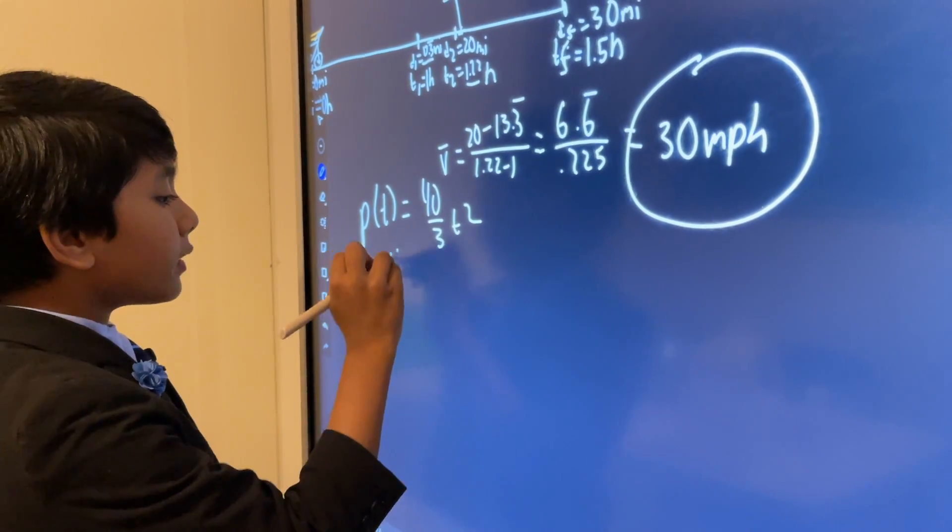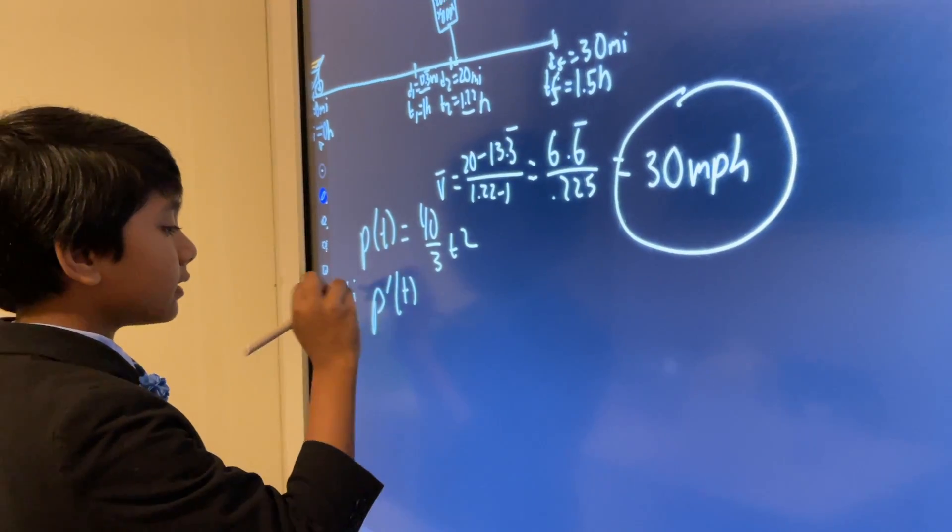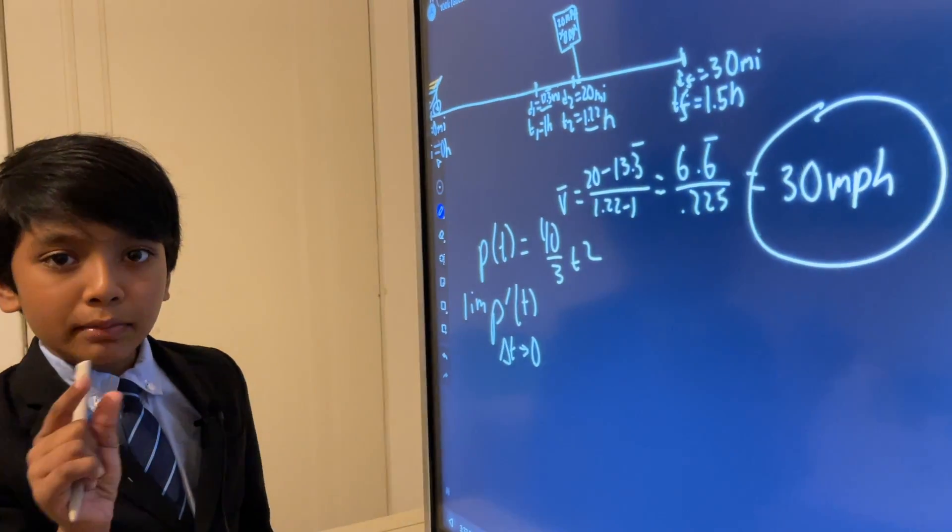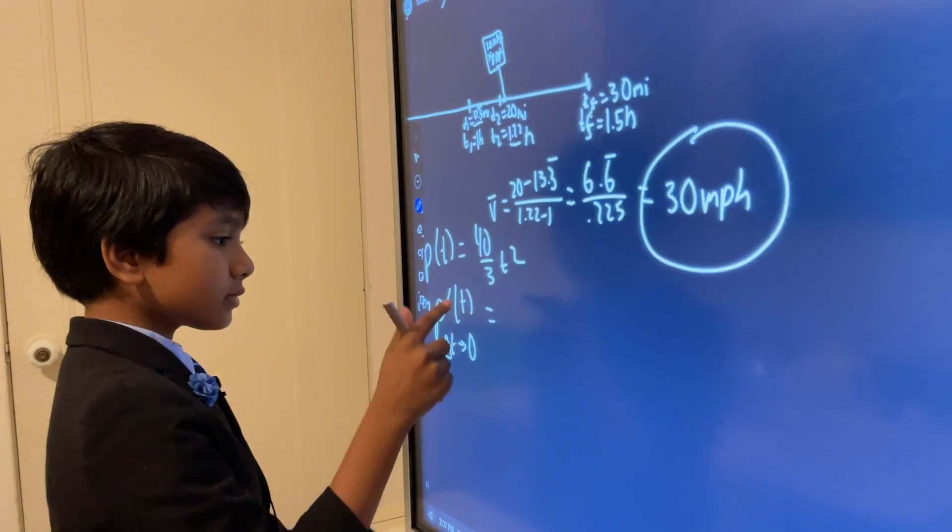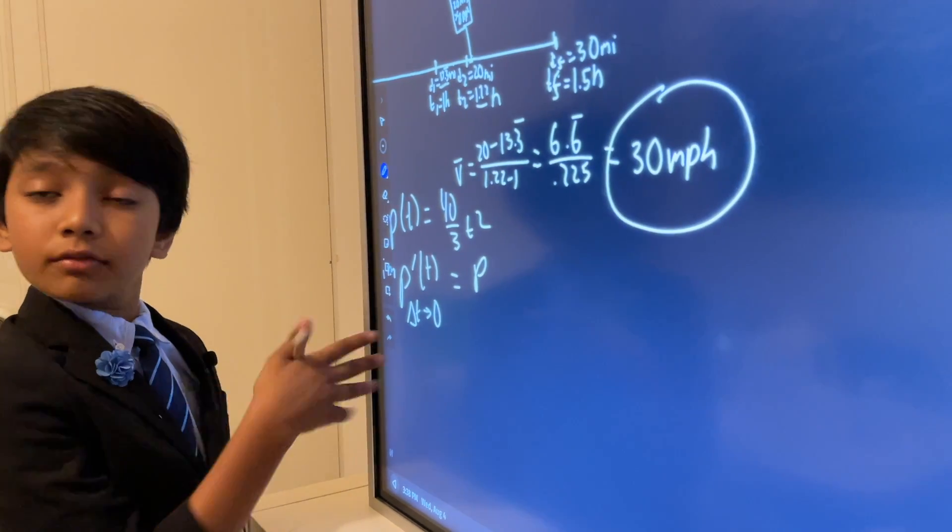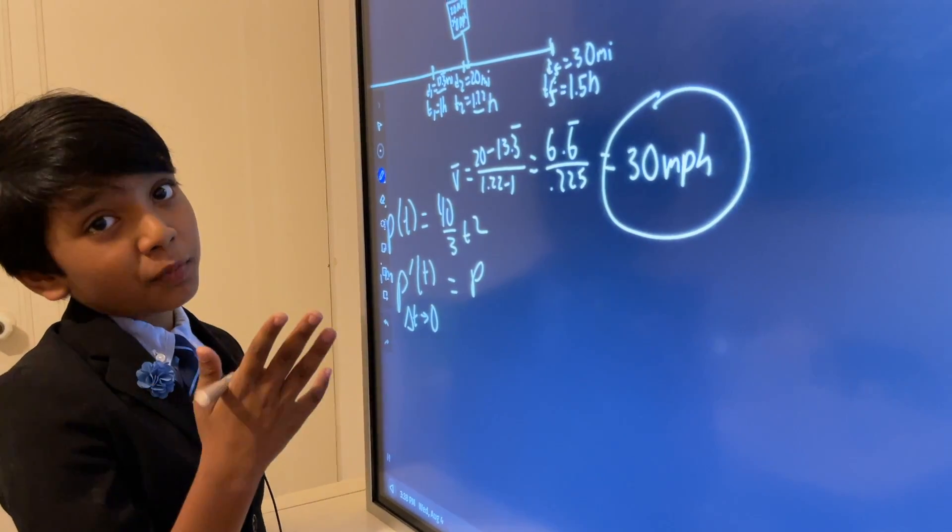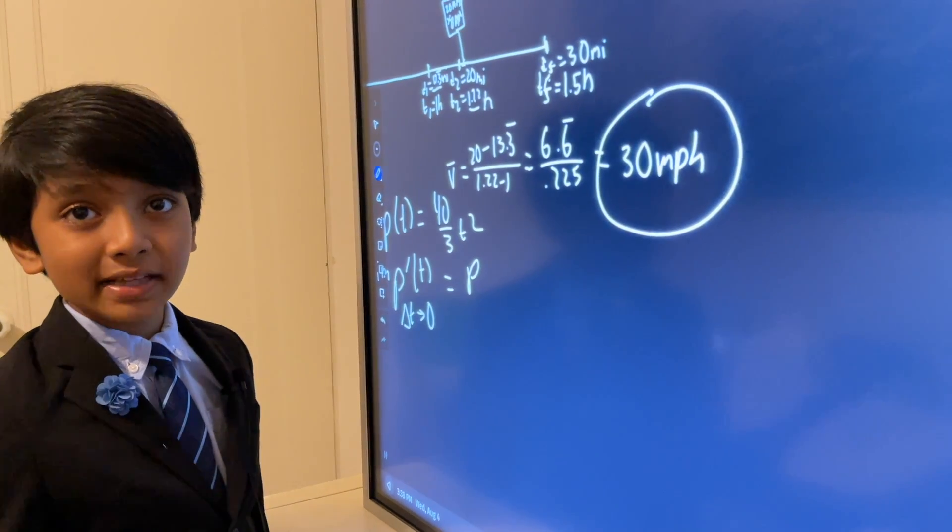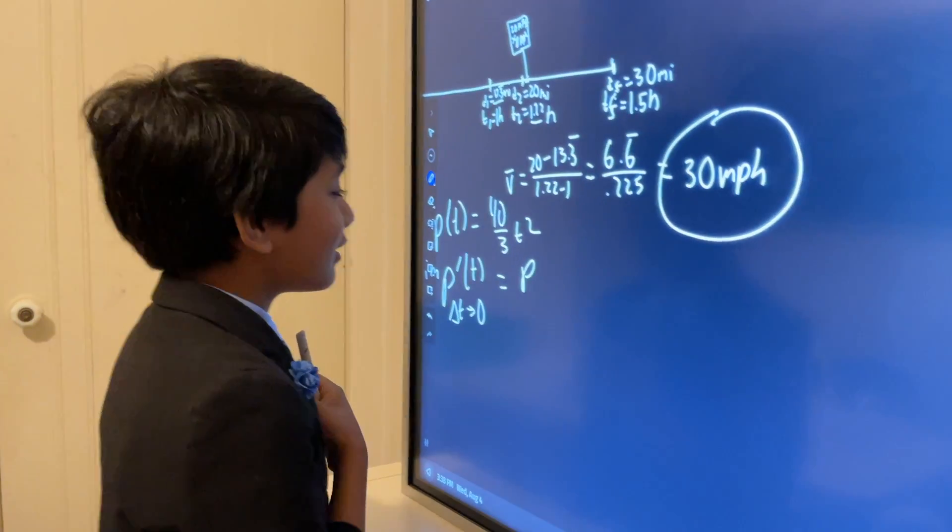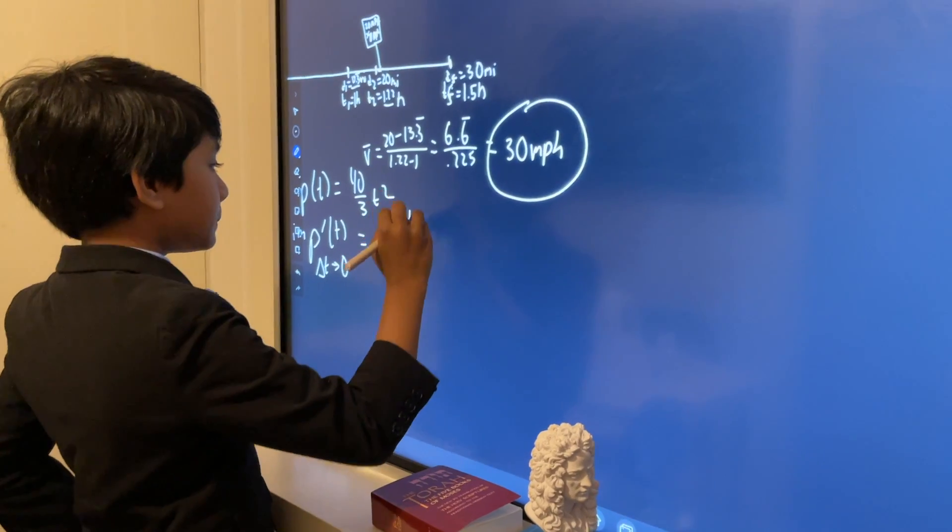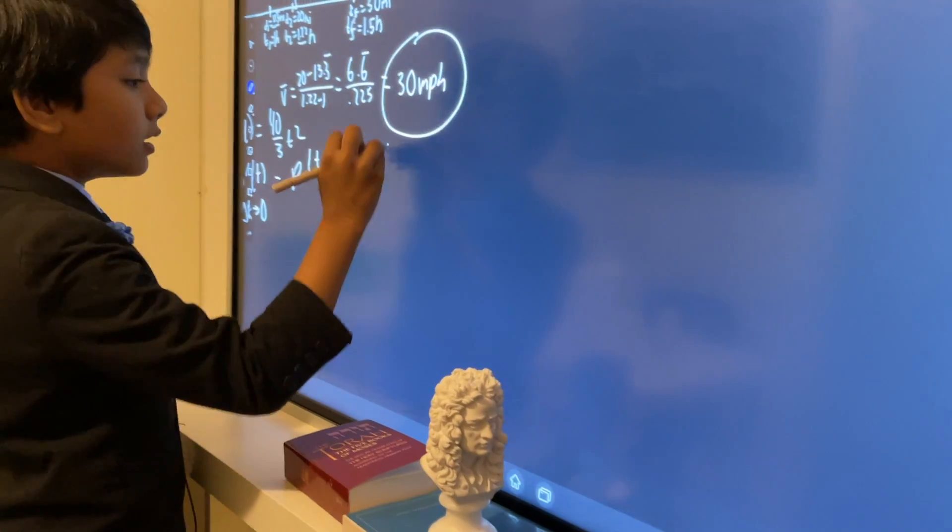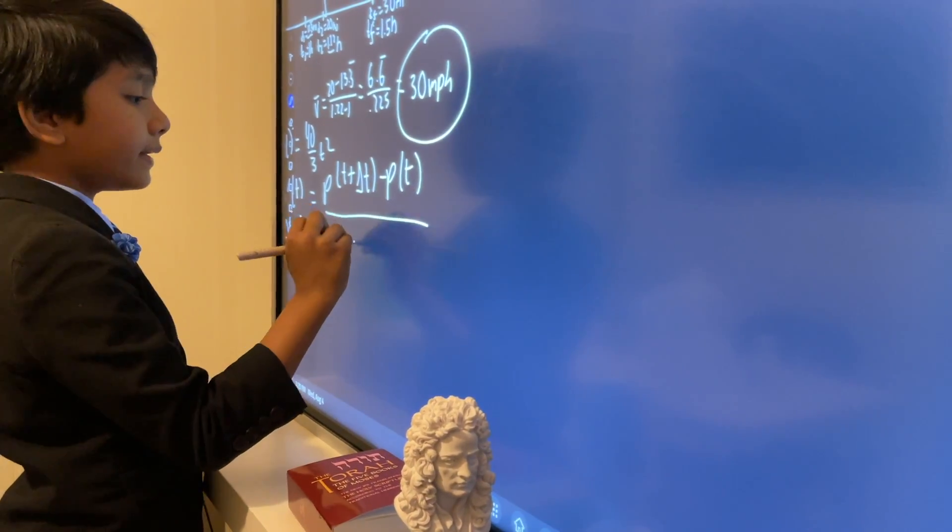And then, p prime of t, well, the limit of p prime of t is as the change in t goes to 0. Remember, we want an extremely small time interval. It's equal to, if you know basic calculus, then you should watch this. But, if you don't know basic calculus, then you should go back to our calculus series. So, p of t plus delta t minus p of t divided by delta t.